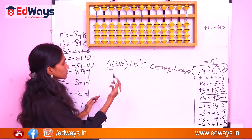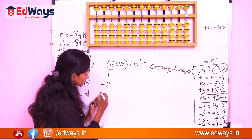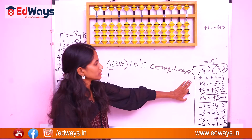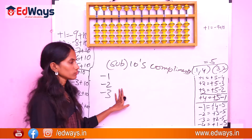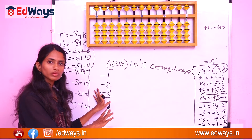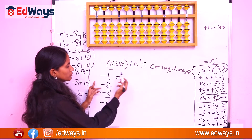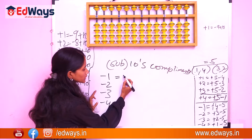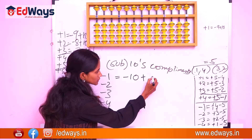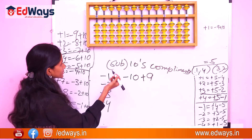For example, minus 1, minus 2, minus 3 already covered in fives complements. Now I will give you the formula of how to do subtractions using tens complements. For example, minus 1 would be minus 10 plus the complement — that is, 1's complement is 9, as already discussed.